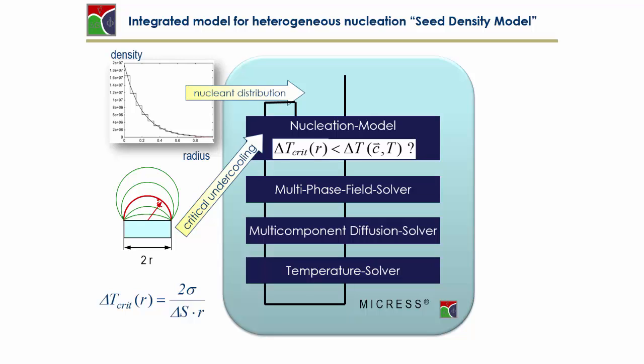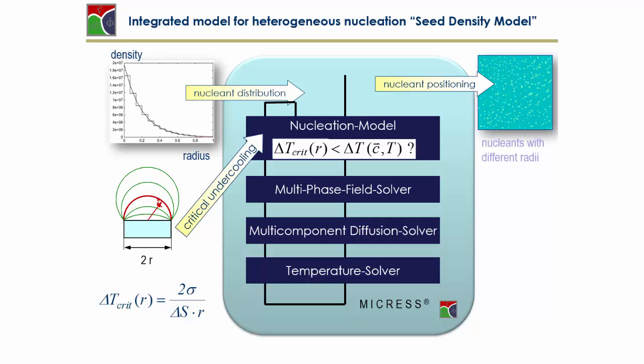These different particles are positioned in the calculation area and are potential nucleation sites. Once the process conditions, the local conditions of temperature and concentration, fulfill this criterion, the new nucleus is set in this area.